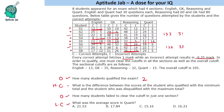How many students failed to clear the cutoff in just one section? S1 could not clear in just one section, S2 also, then S6 and S8 — so there are four such students. This is the easiest question, and the qualified-students question was the second easiest.